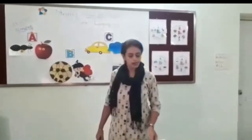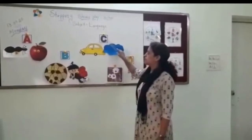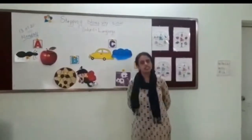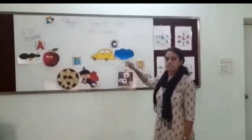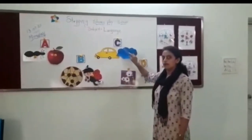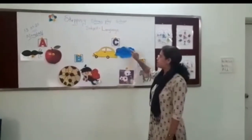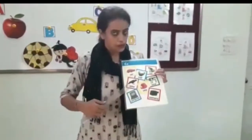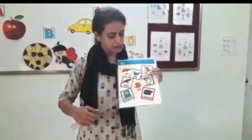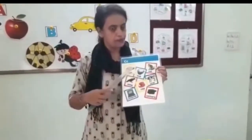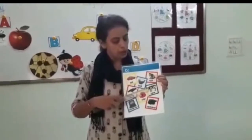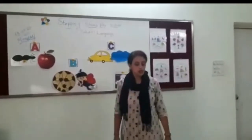Now we will see letter C. Which letter is this, children? This is letter C. And what is the sound of letter C? C says C. C for Car, C for Cloud, C for Crow, C for Computer, C for Cup, C for Cab, C for Cat, C for Cow and C for Camera. These are the objects of letter C.